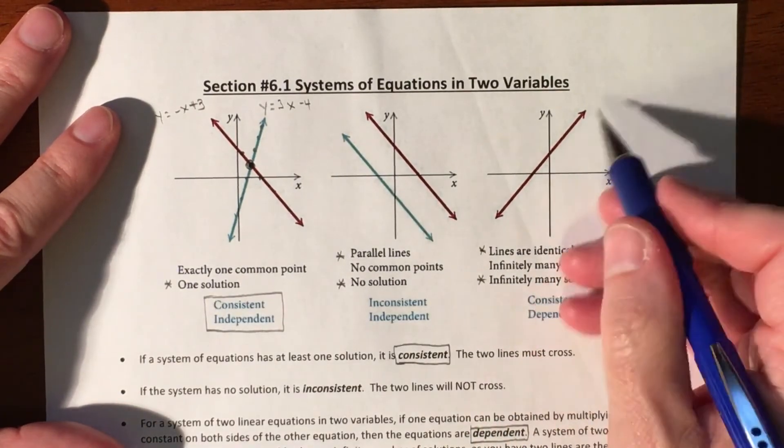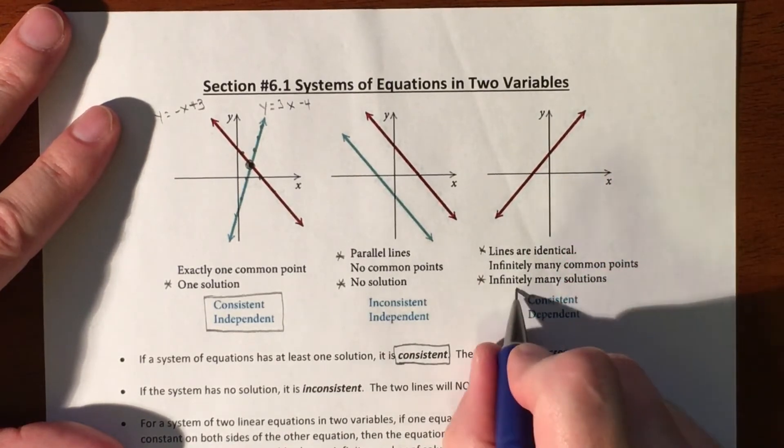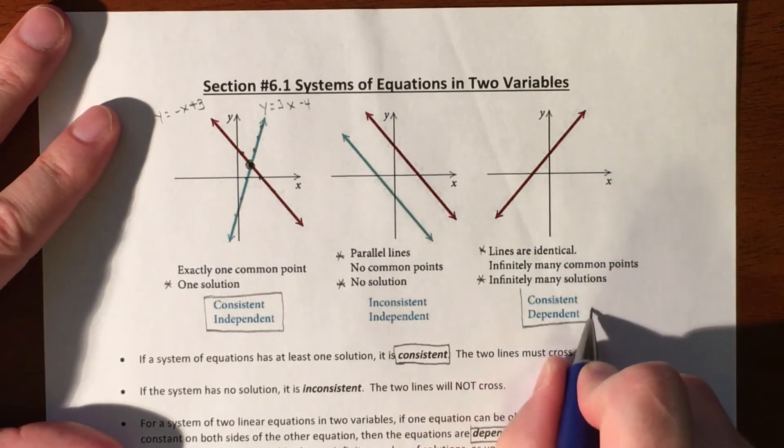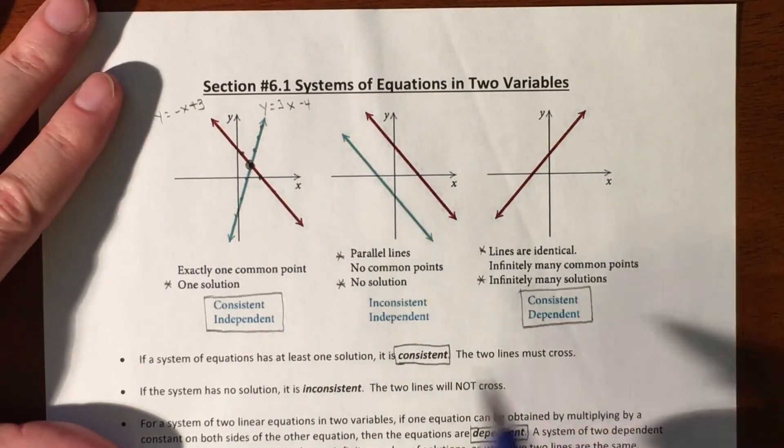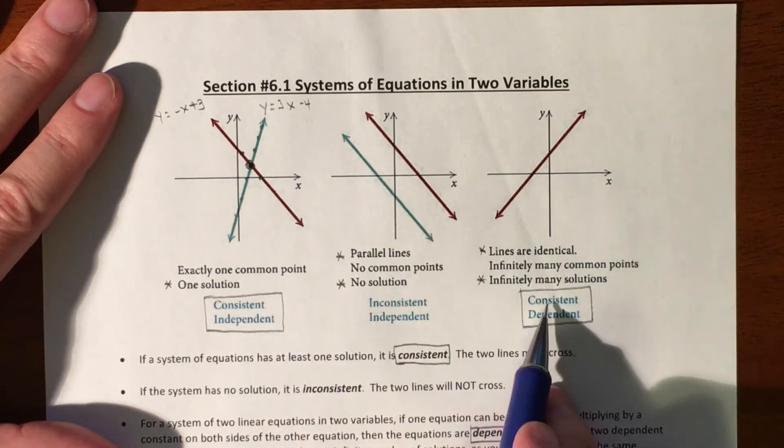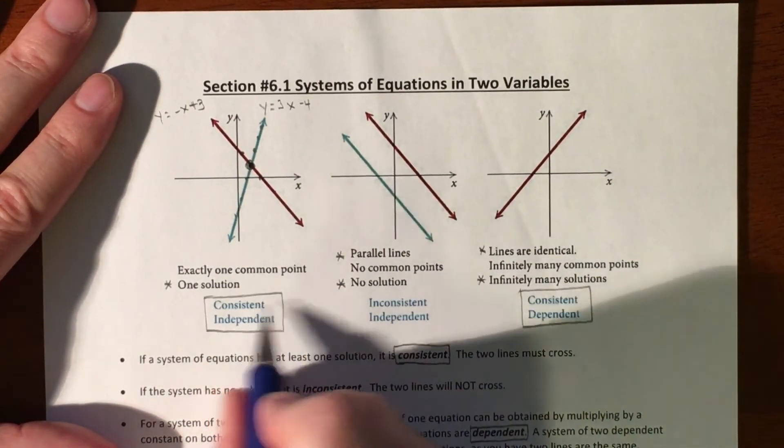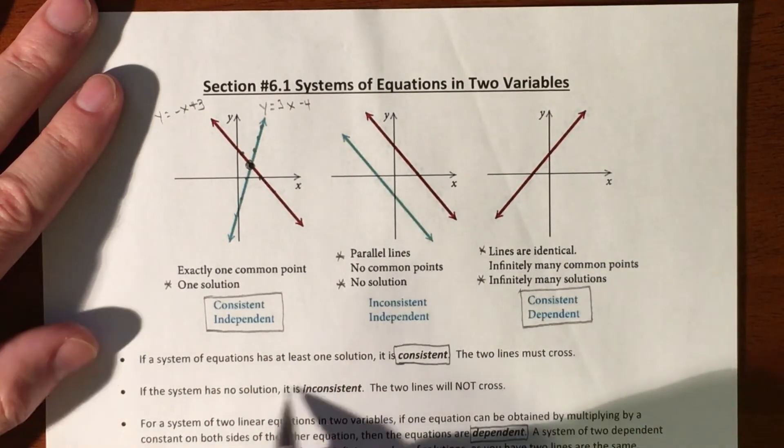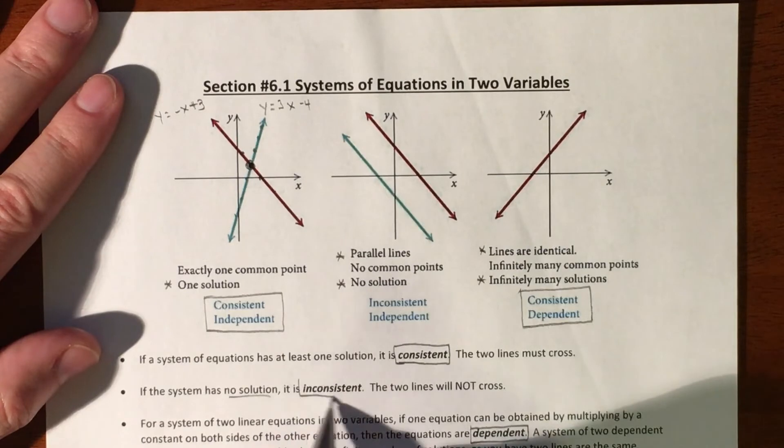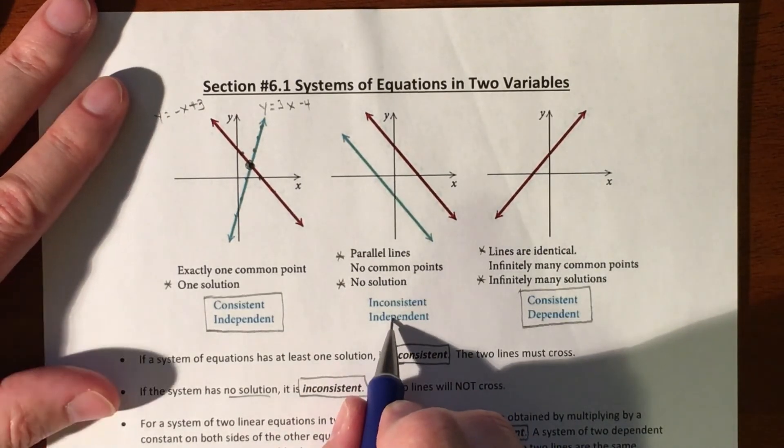If you have infinitely many solutions, consistent means you have a solution, and dependent means they're identical to each other. And then if you don't have a solution, such as with parallel lines, then you're inconsistent. Consistent means solution, so inconsistent means no solution. And if they're inconsistent, they're definitely independent of each other.